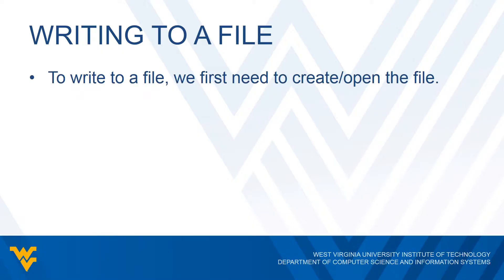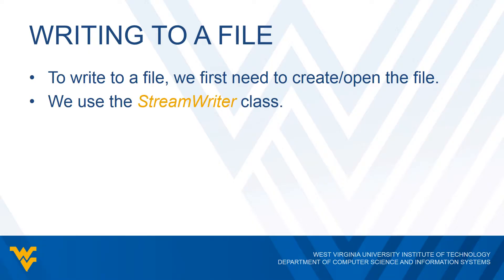In order to write to a file, we first have to create or open it. If the file is already there, we open it; otherwise, we create it. This is similar to other programming languages where you have to access the file before you can write to it. The easiest approach in Visual Basic is to use the StreamWriter class. This class comes from the System.IO library, which is another reason to include that import — otherwise you'd have to write 'System.IO.StreamWriter' every time.